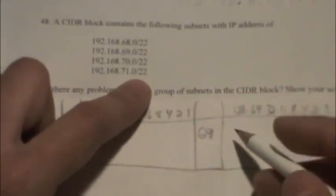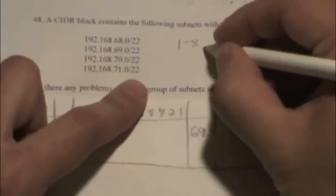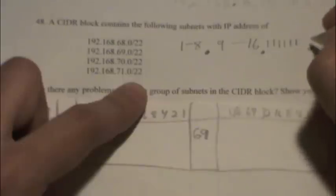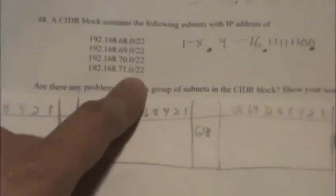If you remember, the slash-22 represents the number of mask bits from left to right. So if we have the first bits 1 through 8 are all 1s, bits 9 through 16 are all 1s, theoretically we would make it all the way to 24 here, but we have 22. So we're going to write 17, 18, 19, 20, 21, 22, 23, and 24 make the rest of the bits here.